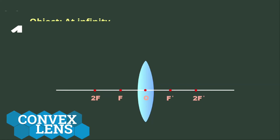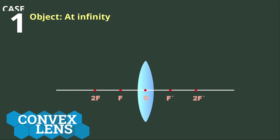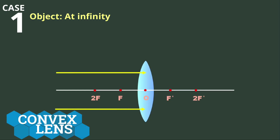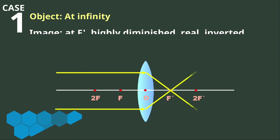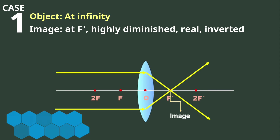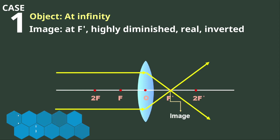Case 1: the object is located at infinity. When an object is at infinity, the light rays coming from the object, parallel to the principal axis, get refracted as they pass through the convex lens and converge at the focus on the other side of the lens. Thus, the real image is formed at the focus F' on the other side of the lens. The size of the image is much smaller than the object, or highly diminished, and since the image is real, it is inverted.